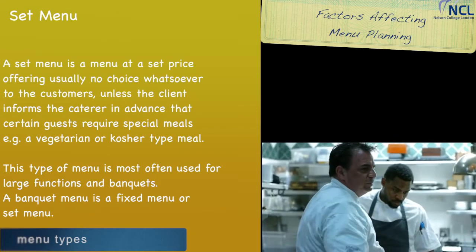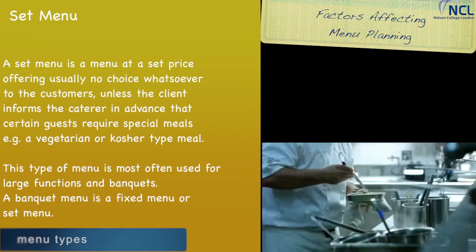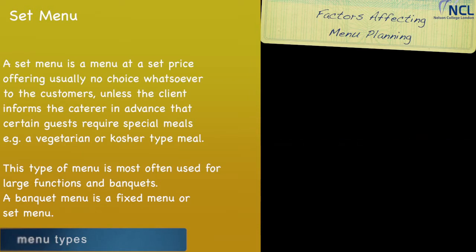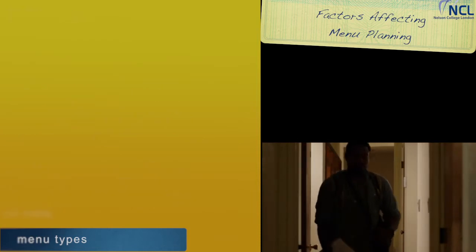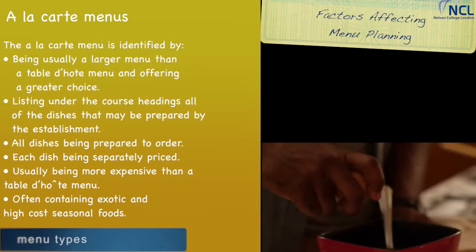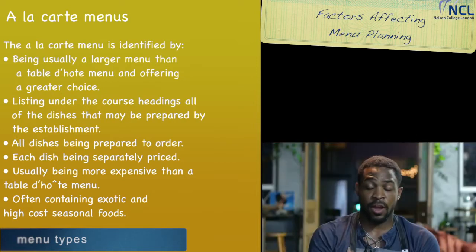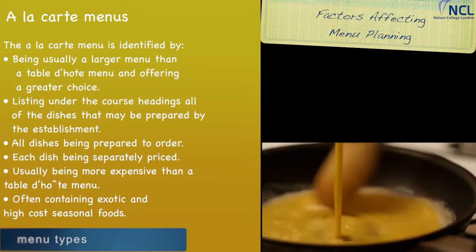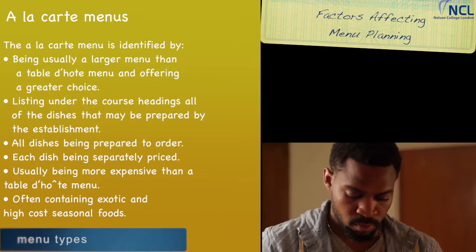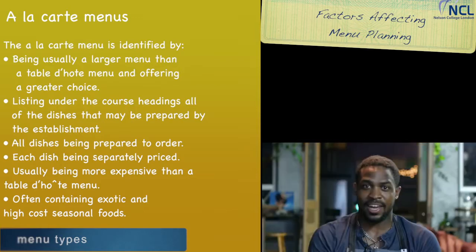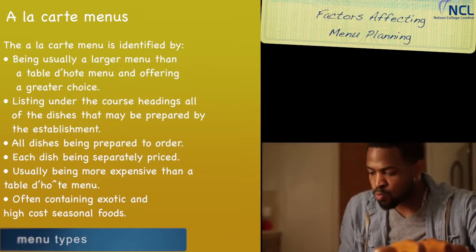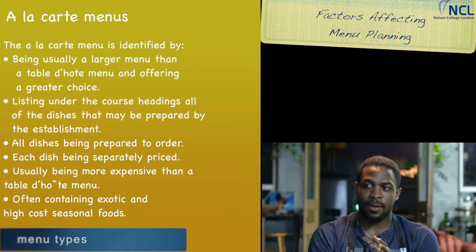For example, a vegetarian or kosher type meal. This type of menu is often used for large functions and banquets — a banquet menu is a fixed or set menu. The à la carte menu is usually larger than a table d'hôte menu and offers a greater choice. It lists all the dishes prepared by the establishment, all dishes are prepared to order, each dish is separately priced and usually more expensive, and it often contains exotic and high-cost seasonal foods.